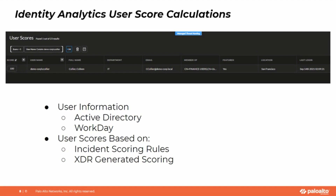Identity analytics in XDR 3.0 also plays a role in user scoring. You can go under the assets tab and look at user scores, and these are calculated based on information gleaned from Active Directory or from Workday. They are based either on an incident score that you set up in the incident scoring configuration or on internally generated rules that calculate a score and compute its total value. So when you have users that are persistently being involved in breach or incident situations, these users in the scoring will bubble up to the top when you sort the user scores there.